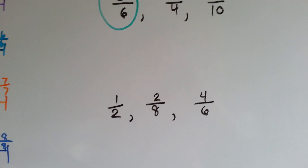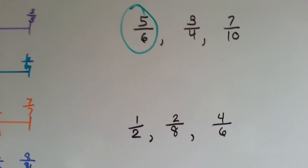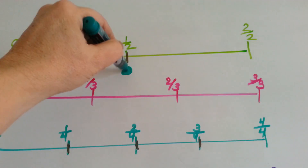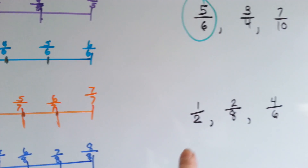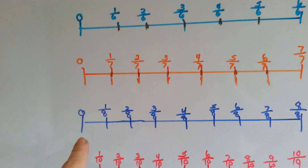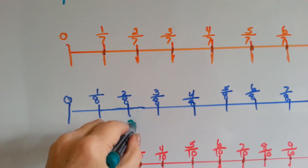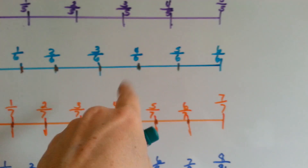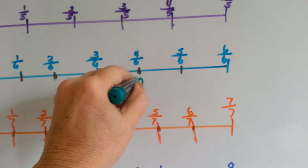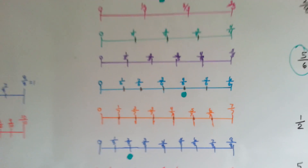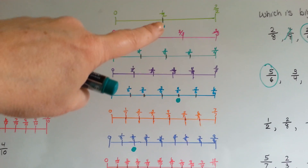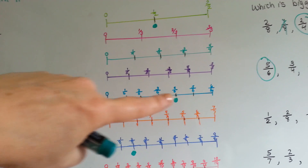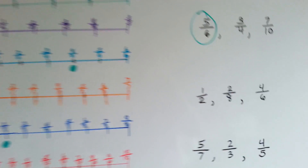Which is bigger: half, 2 eighths, or 4 sixths? Let's find each one. Here's half — we'll put our green dot. Then we've got 2 eighths — here's our eighths — put our green dot. And then we've got 4 sixths, so we go to the sixths and find 4 sixths. I'm going to step back and we're going to see which green dot won. We got half, 2 eighths, and 4 sixths. Look at that — 4 sixths is winning. He's almost near the finish line. So 4 sixths is bigger.